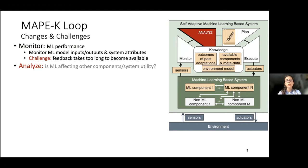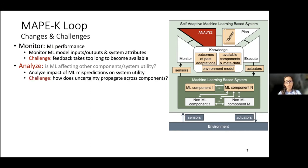In terms of the analysis stage, we need to understand whether and how the machine learning component is actually affecting the other components in the system or the overall system utility. However, how does uncertainty actually propagate across the components in the system, and specifically across the machine learning models? This is also a challenge.